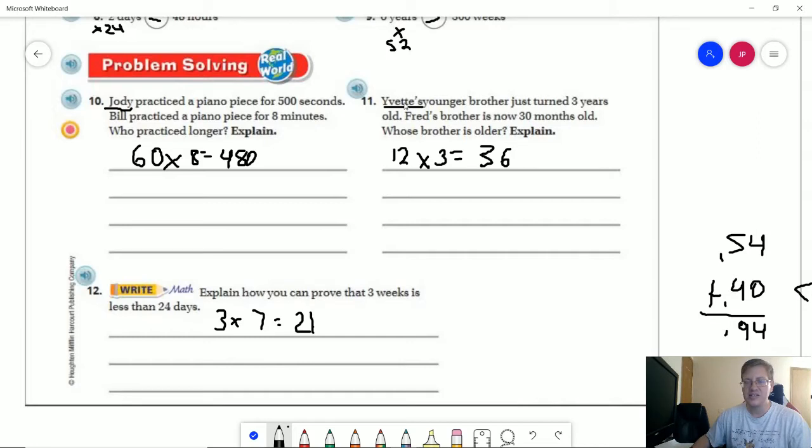For number 11, Yvette's brother is older. So 12 times 3 would give us the number of months. And that would give us 36 months compared to 30 months.